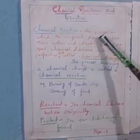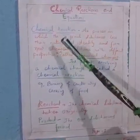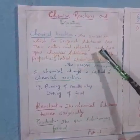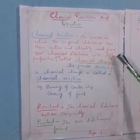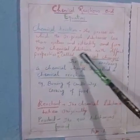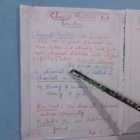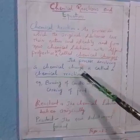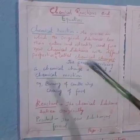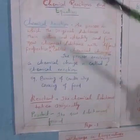Chemical reaction can be explained as the process in which the original substances lose their nature and identity and form new chemical substance with different properties are called chemical changes. The process involving chemical changes is called chemical reaction. So, I think there is no basic differences between chemical changes and chemical reactions.